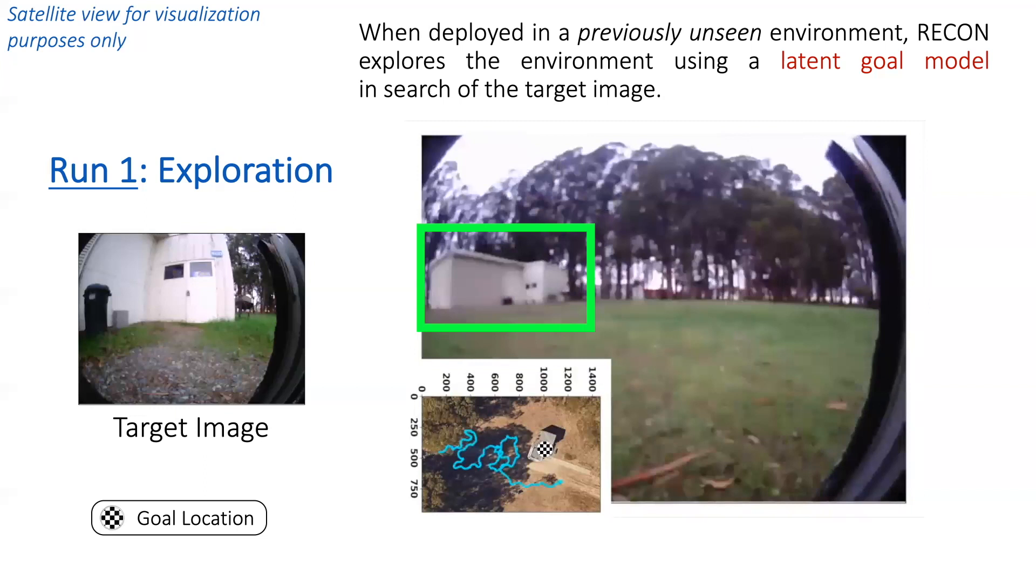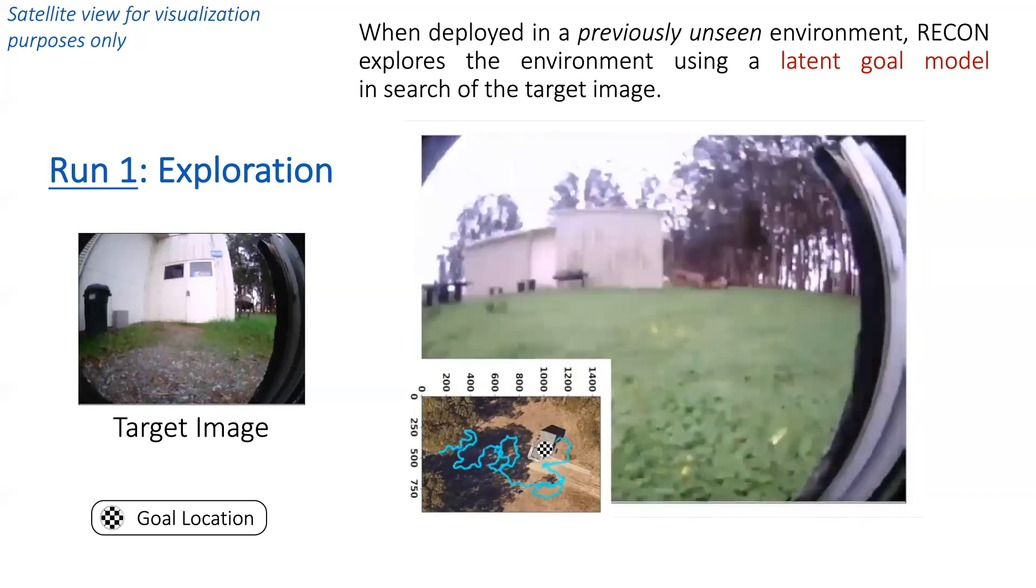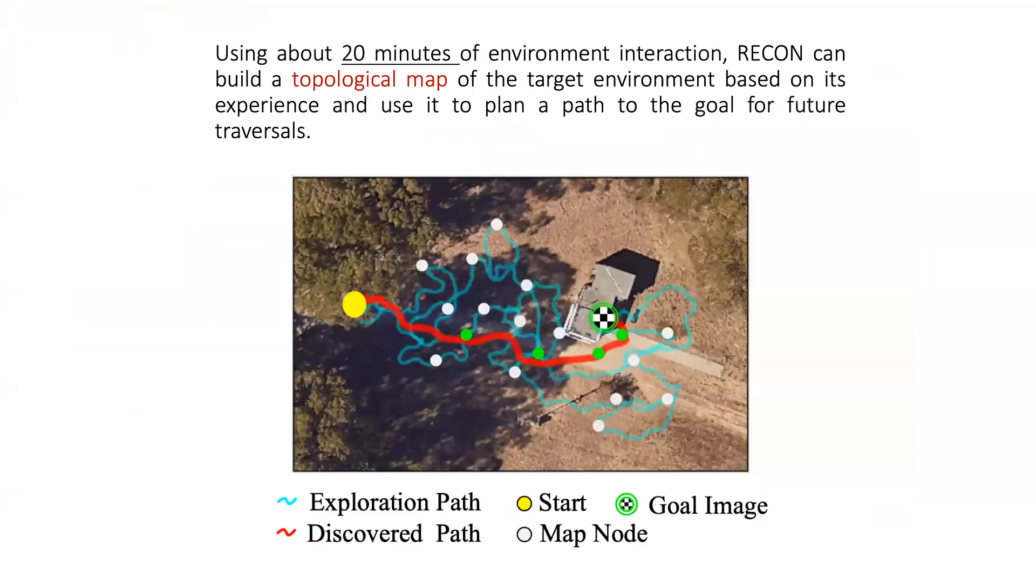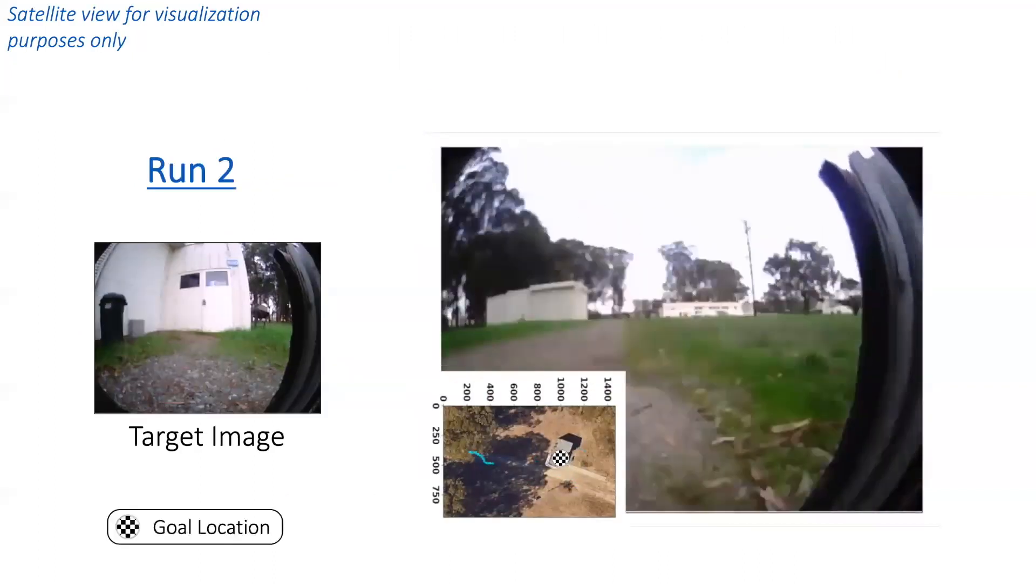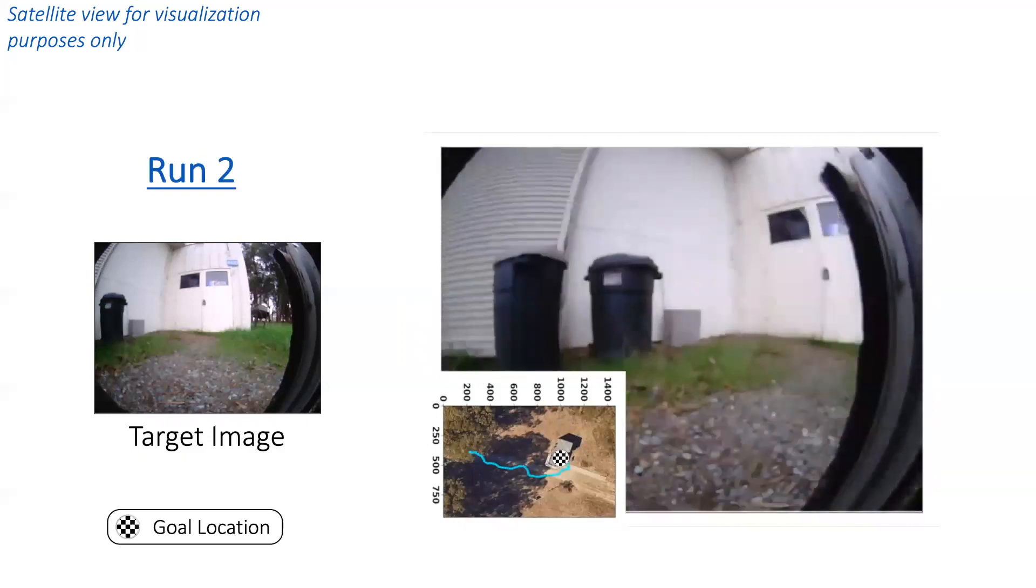On discovering the desired goal, RECON approaches it and the exploration trajectory ends. Using about 20 minutes of environment interaction, shown in cyan, RECON can build a topological map of the target environment based on its experience and use it to plan a path to the goal through the topological map, shown in red. RECON can use this recovered path in subsequent traversals of the environment to quickly reach the target.